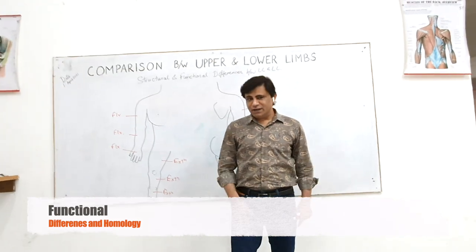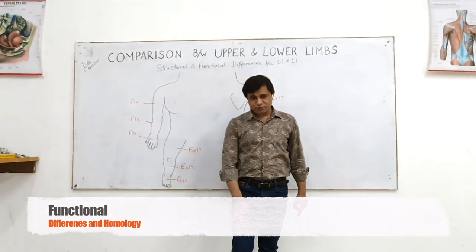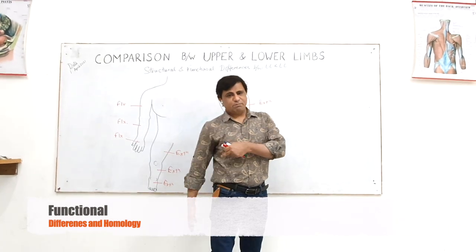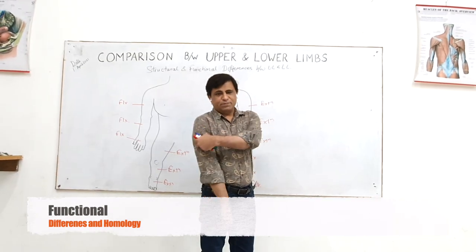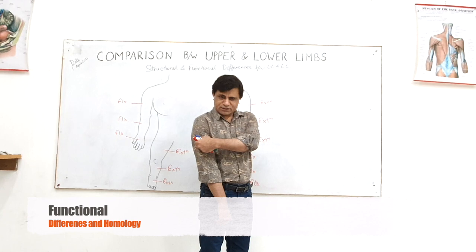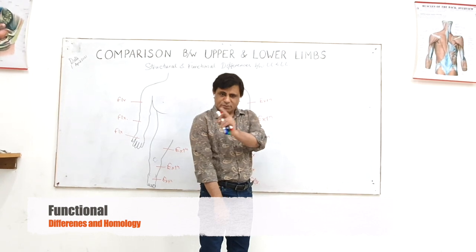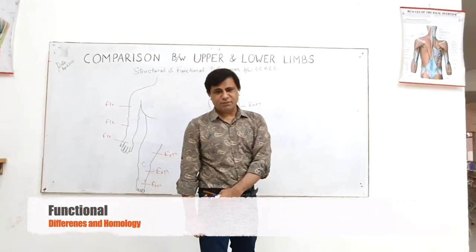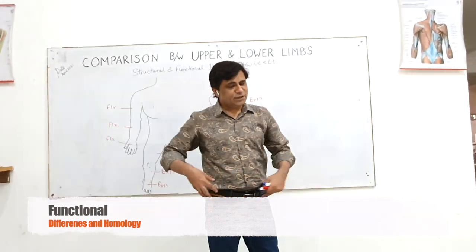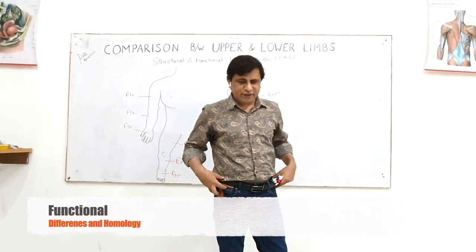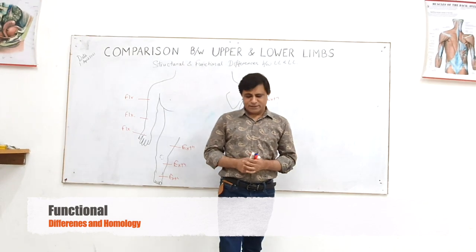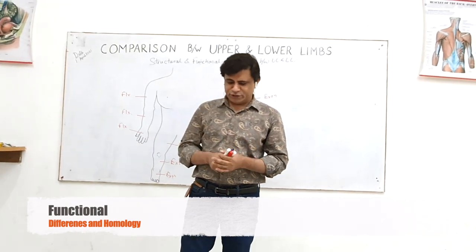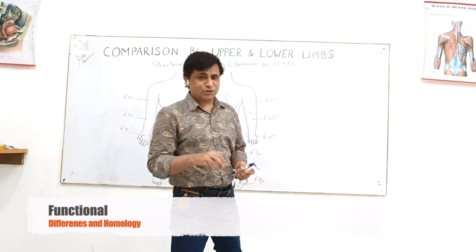Although the compartments are reversed — front of thigh is extensor, front of arm is flexor, back of thigh is flexor, back of arm is extensor — the terminology of movement at shoulder and hip is still the same. The reason is these joints are fixed. Another reason: if you start comparing from the tetrapods, they are quadruped animals.